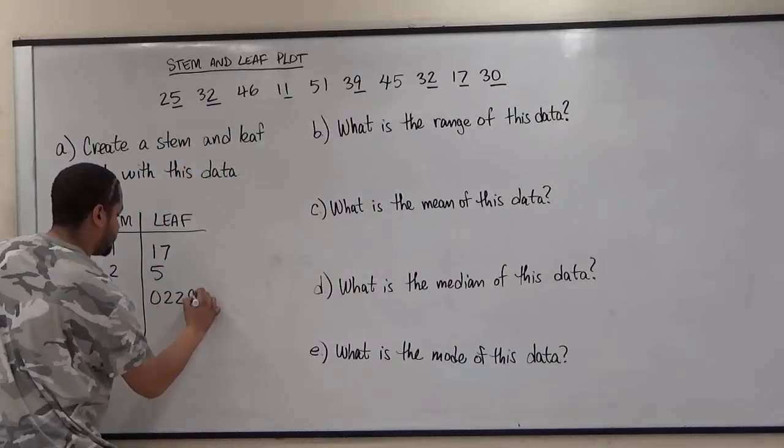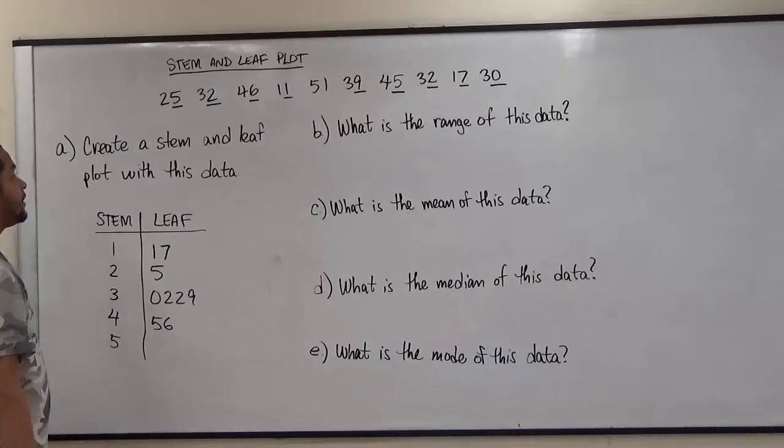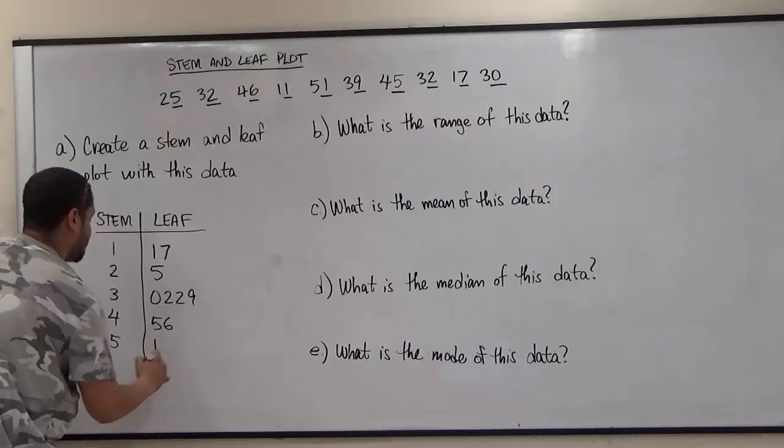Now for the forties we have a six and also a five here, so we're going to put five followed by a six. And our last stem is five and for five we have just the one. This concludes the stem and leaf component of this video.